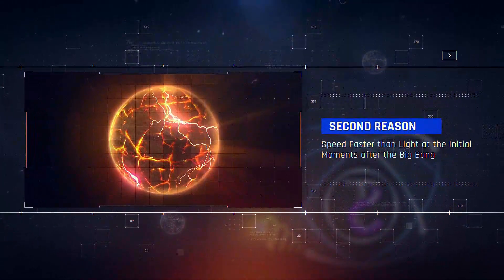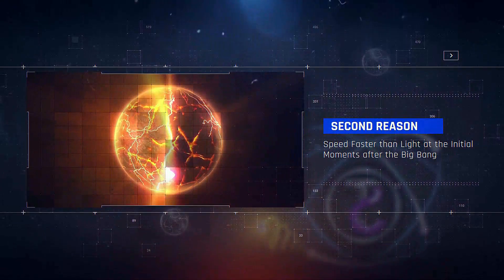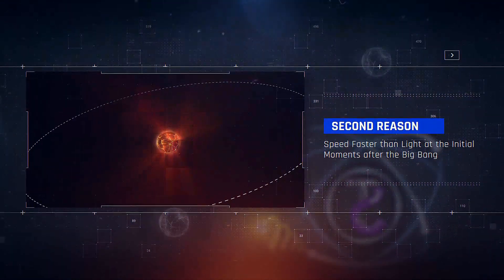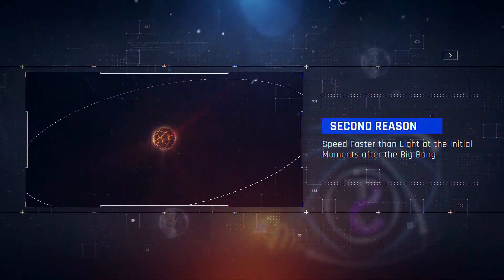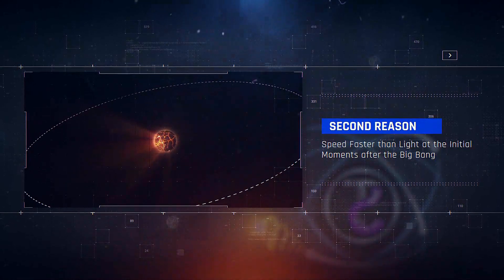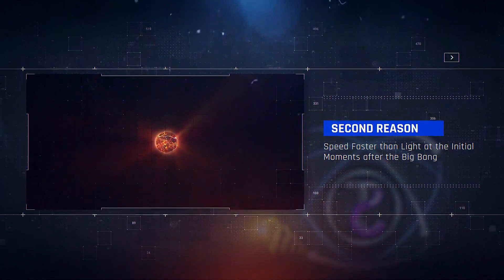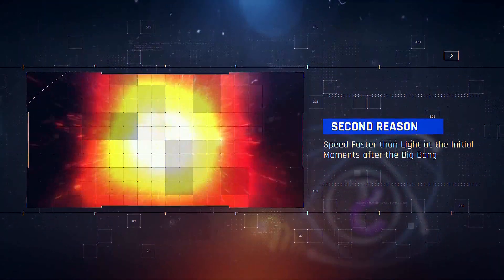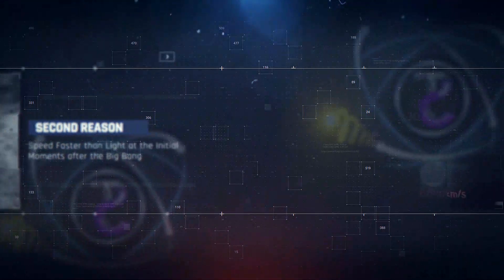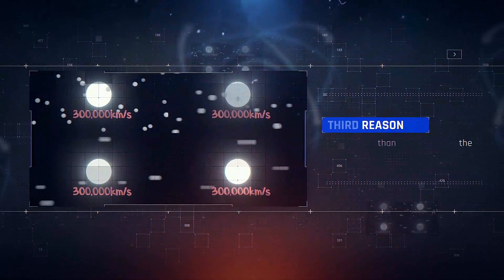2. Speed faster than light at the initial moment after the Big Bang. After the Big Bang and consuming a small part of energy to create matter, the rest of the energy has shown itself in the form of kinetic energy, and its result is the creation of speed faster than light.